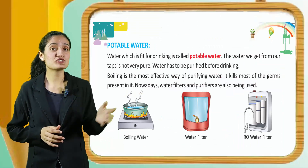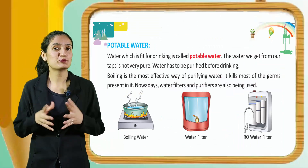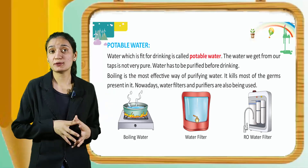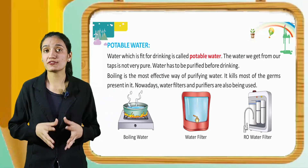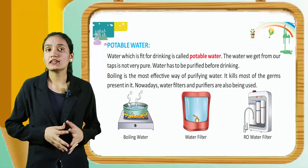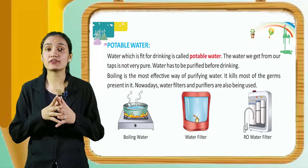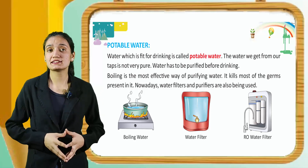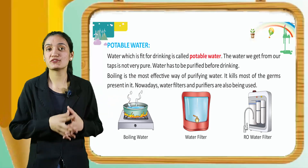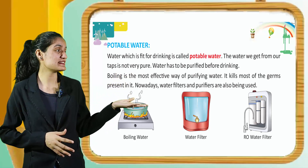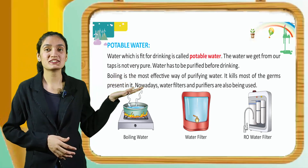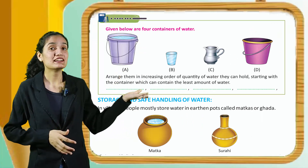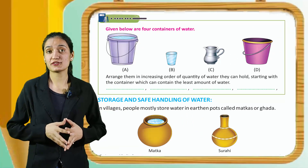Potable water: water which is fit for drinking is called potable water. The water we get from our taps is not very pure, so water has to be purified before drinking. Boiling is the most effective way of purifying water — it kills most of the germs present in it. Nowadays, water filters and purifiers are also being used.